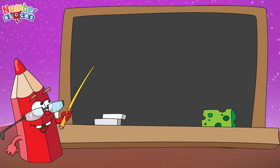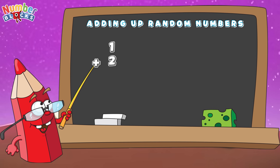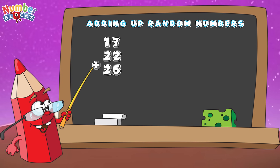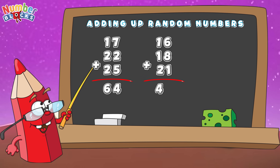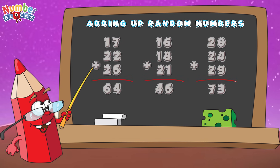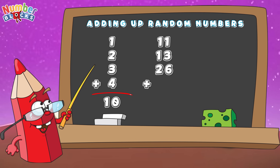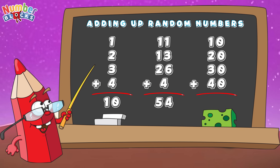Let's do a recap! Adding up random numbers: 1 plus 2 is equal to 3. 6 plus 8 is equal to 14. 12 plus 15 is equal to 27. 17 plus 22 plus 25 is equal to 64. 16 plus 18 plus 21 is equal to 45. 20 plus 24 plus 29 is equal to 73. 1 plus 2 plus 3 plus 4 is equal to 10. 11 plus 13 plus 26 plus 4 is equal to 54. 10 plus 20 plus 30 plus 40 is equal to 100.